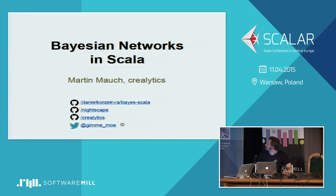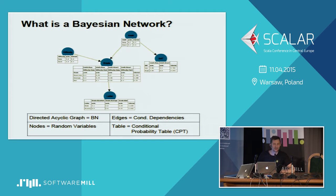For some people this is their first Bayesian network. What you see here is a directed acyclic graph of nodes. Those nodes in blue are random variables — variables whose value depends on some kind of random process — and those nodes are linked by edges, which signify conditional dependency between them, something you can think of as influence or causality.